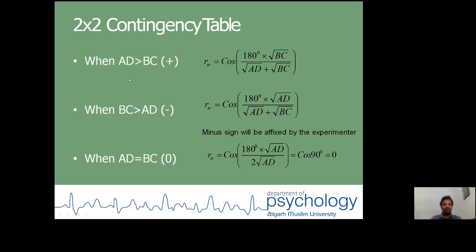If AD, if you multiply the cell frequencies of cell A with cell frequencies of cell D and the multiplication is greater than BC, then it will be a positive correlation. And the formula used to calculate the tetrachoric correlation is cosine 180 degrees times square root BC divided by square root AD plus square root BC.